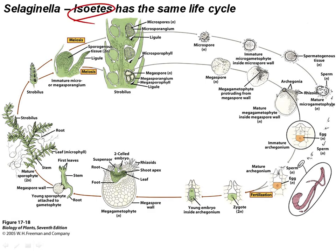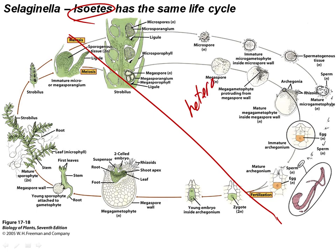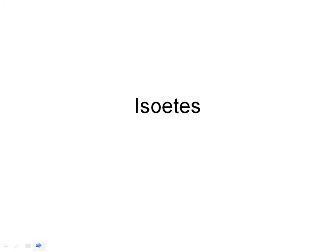Selaginella life cycle again, which is also the Isoetes life cycle. You can find meiosis and fertilization on this diagram — we've got a heterosporous and endosporic life cycle. Isoetes is going to be just the same as that: same life cycle, different morphology. Our last genus, Isoetes: same life cycle, different morphology as in Selaginella — it's going to be heterosporous and endosporic.